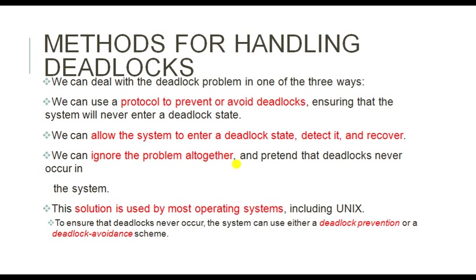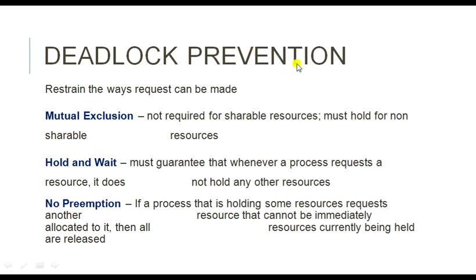To ensure deadlock never occurs, the system can use either a deadlock prevention or a deadlock avoidance scheme. Deadlock prevention means: since we know there are four conditions — mutual exclusion, hold and wait, no preemption, and circular wait — if any single condition or more than one occurs in your program, there will be deadlock. If you avoid these conditions while writing the program, you can definitely prevent the deadlock.